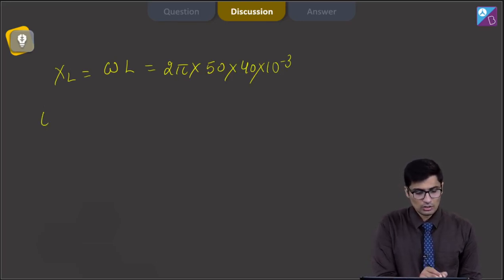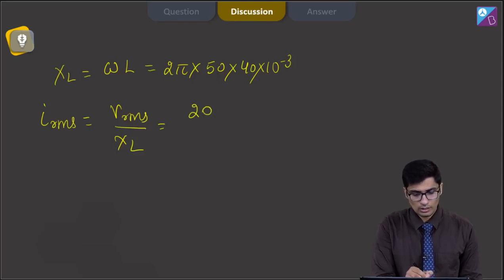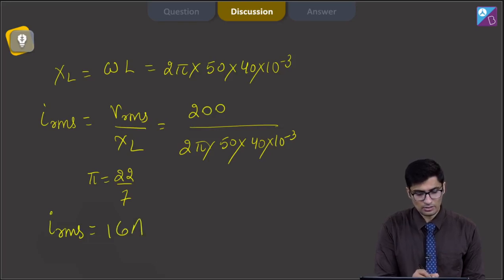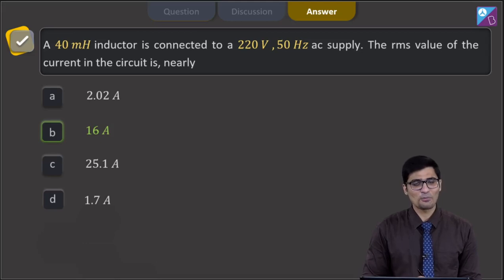Now, the RMS value of the current will be equal to the V RMS that is the RMS value of voltage divided by XL. So, this will be equal to 200 divided by 2 pi into 50 into 40 into 10 raised to power minus 3. Substituting the value of pi as 22 by 7 we get a value of IRMS to be equal to 16 amperes and hence for this question the correct answer is option B.